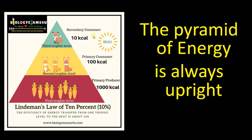Remember, in the case of energy, whatever be the ecosystem, the pyramid of energy is always upright. As per Lindeman's law of 10%, more than 90% of energy is lost as energy is transferred from one trophic level to the next — from producer level to primary consumer level. Due to this energy loss during transfer, the pyramid will always be upright, with maximum energy at the producer level.